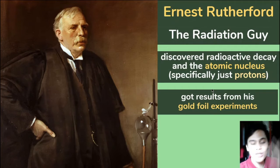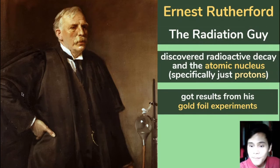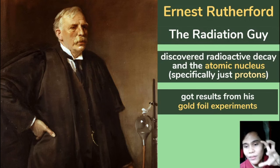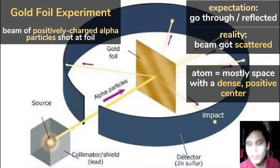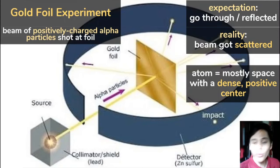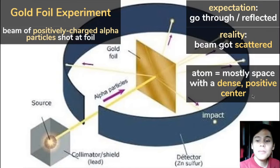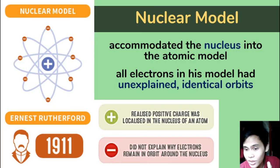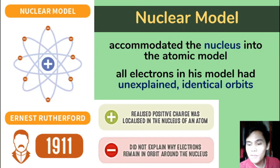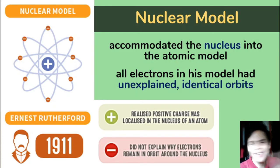We have Ernest Rutherford — the radiation guy. He discovered radioactive decay and the atomic nucleus, specifically the protons — the positive part of the nucleus. He got his results from the gold foil experiment, where he shot a beam of alpha particles from a radioactive source. Since those alpha particles are positive, he expected them to just go through — according to Thomson's atomic model, they would pass through the weak positive charge. But instead it got scattered, which means there must be a dense positive center of the atom. So his model is the nuclear model: a nucleus that's very dense in the center and positively charged, with electrons orbiting around in mostly empty space. It explained the electrons and the condensed positive charge, but he didn't explain the specific orbits of the electrons.